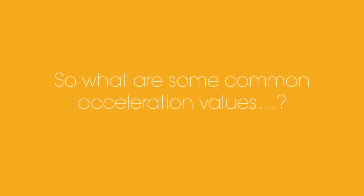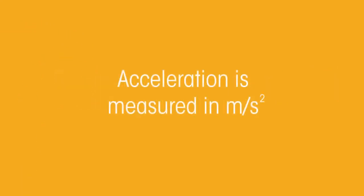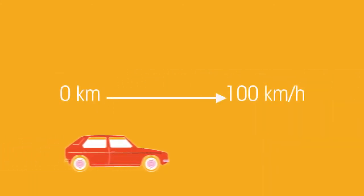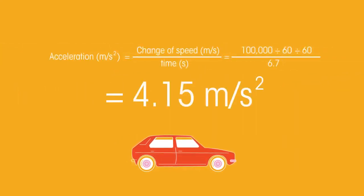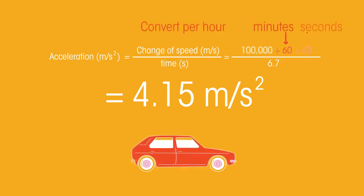So what are some common acceleration values? We already know acceleration is measured in meters per second squared. A common hatchback car can reach 100 kilometers an hour in 6.7 seconds. This gives it an acceleration of 4.15 meters per second squared. This calculation is because we have to turn the 100 kilometers into meters first, then turn the per hour into seconds by turning it into minutes and then seconds, and divide it by 6.7 seconds to get the acceleration.